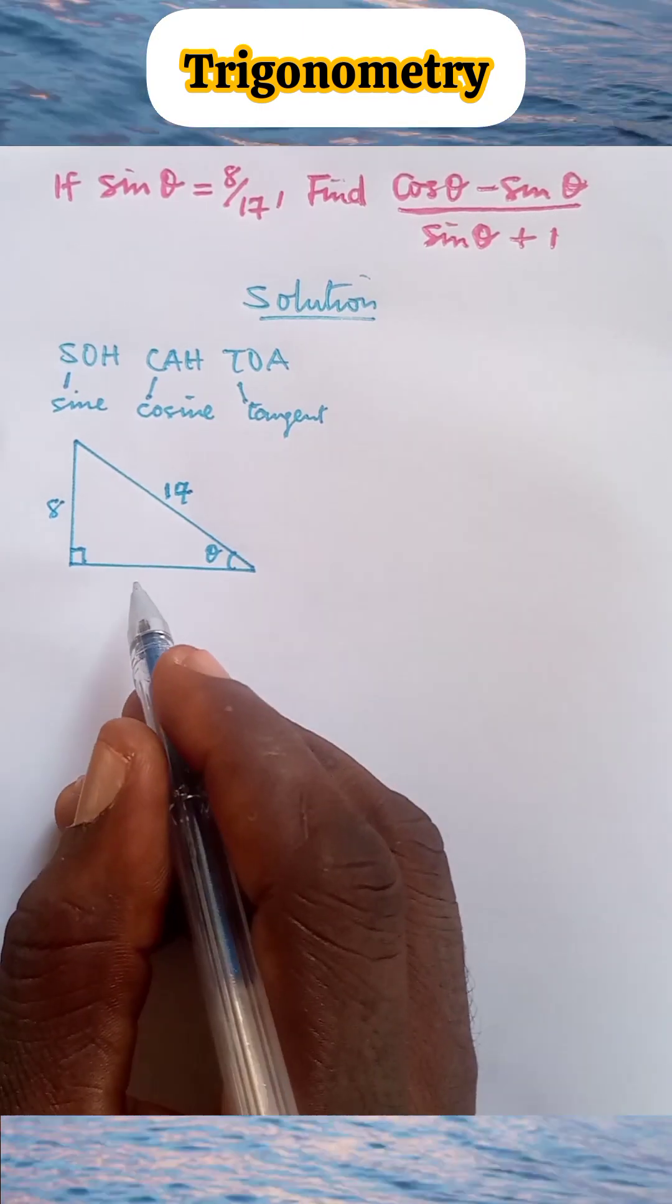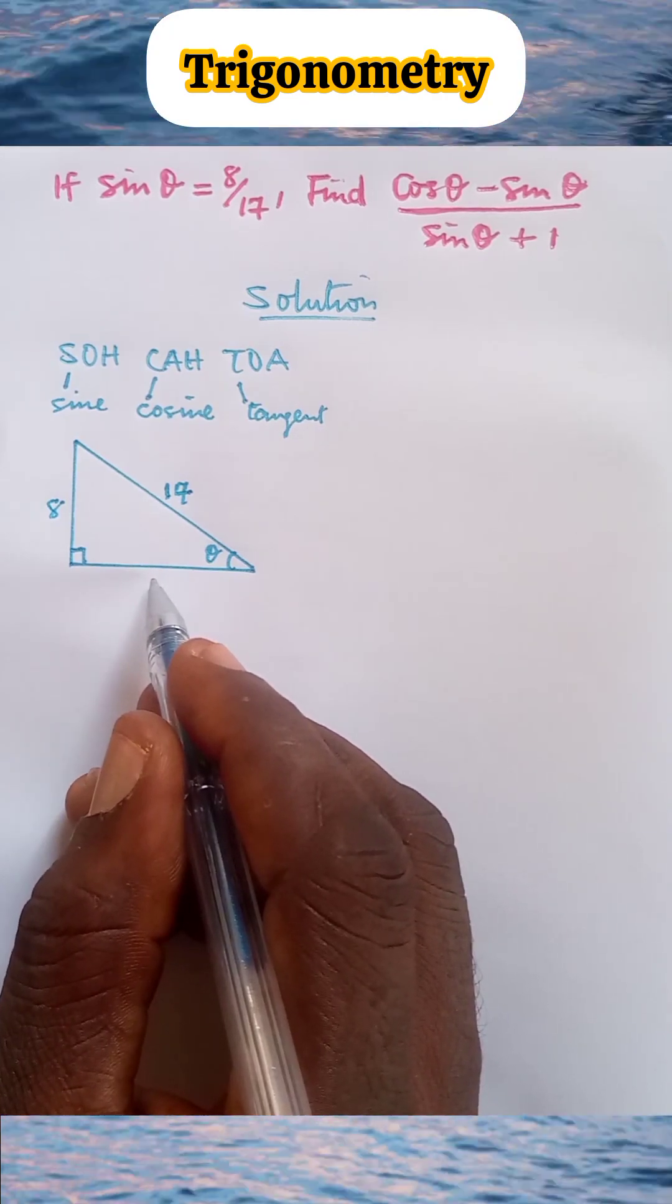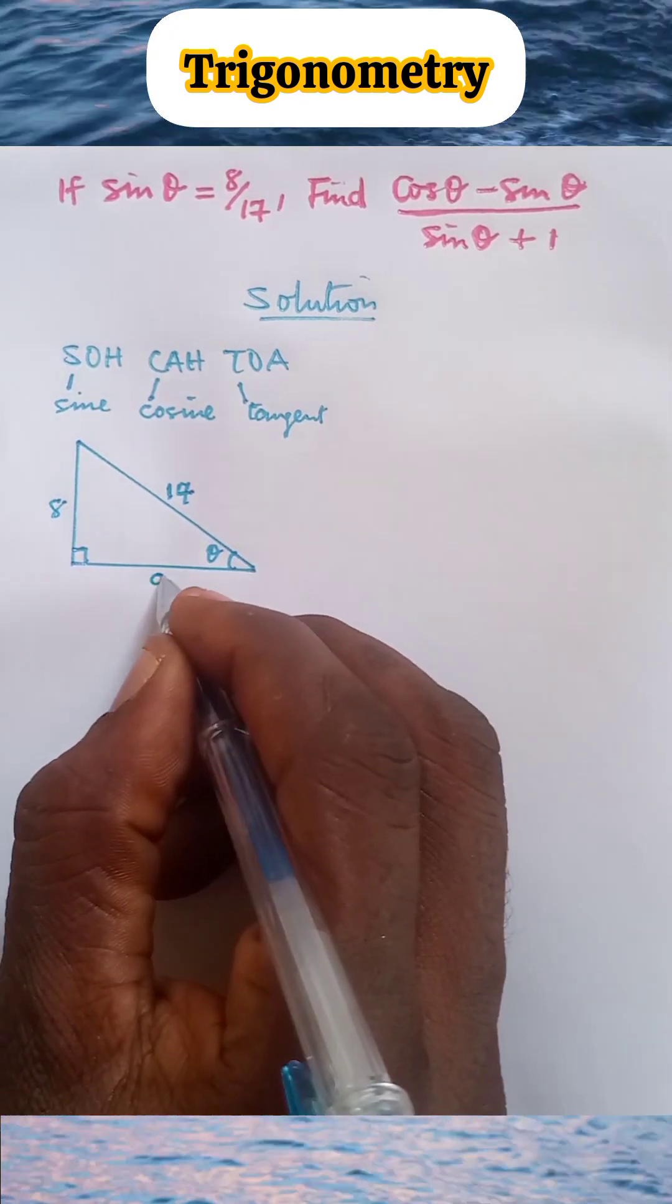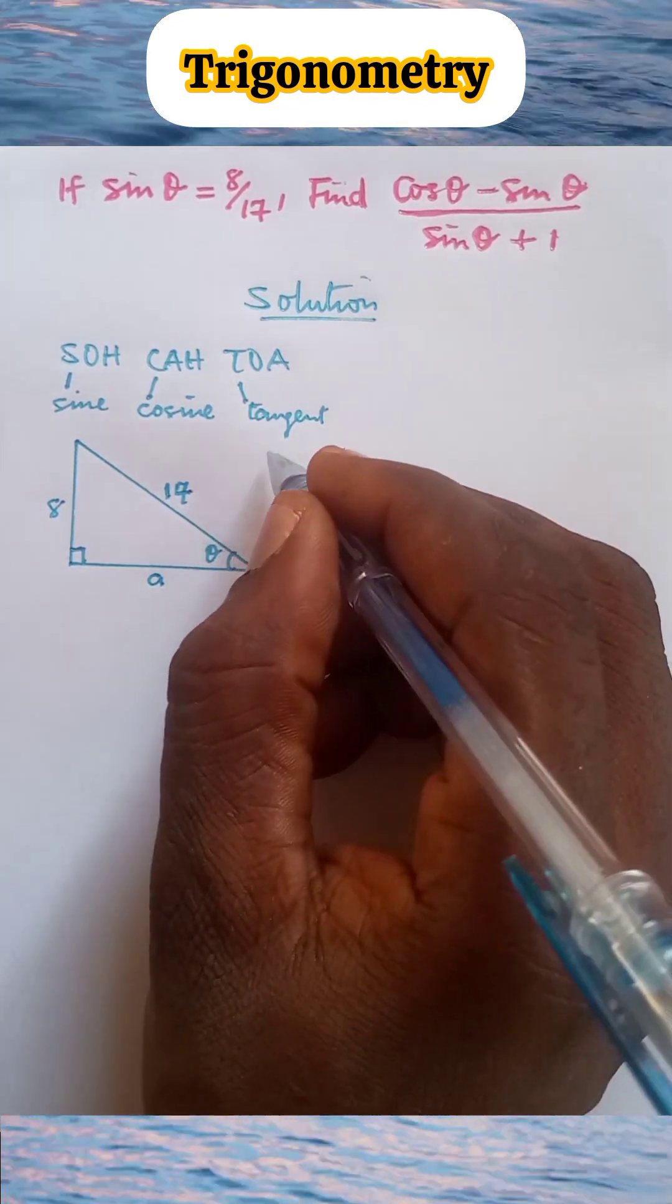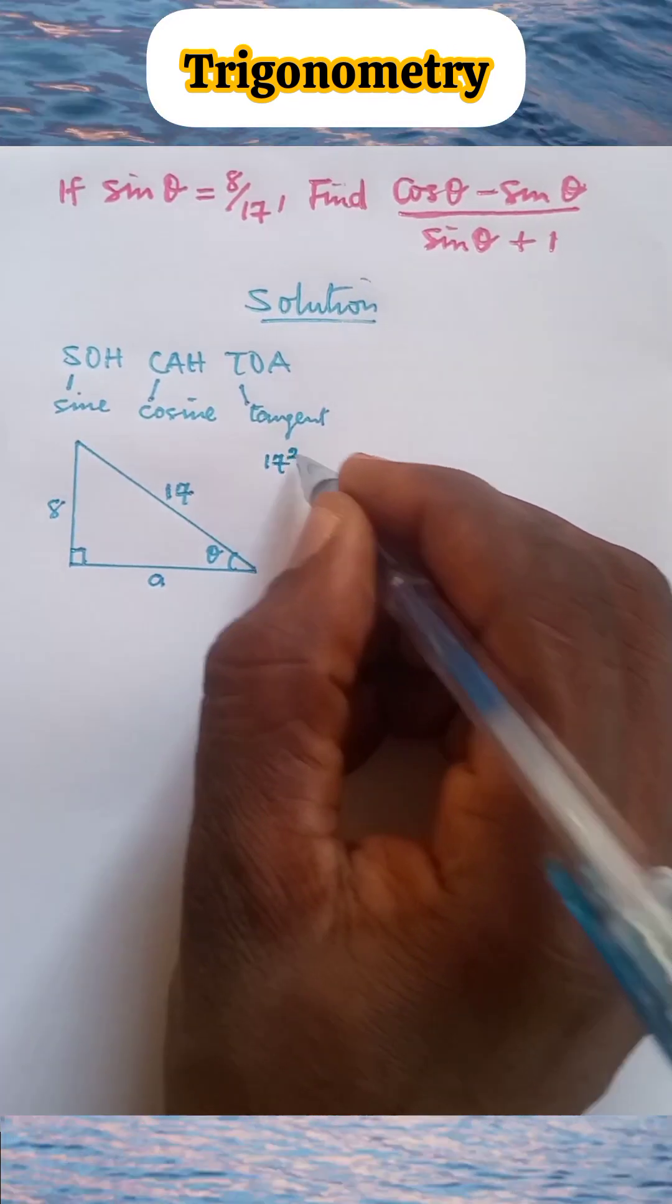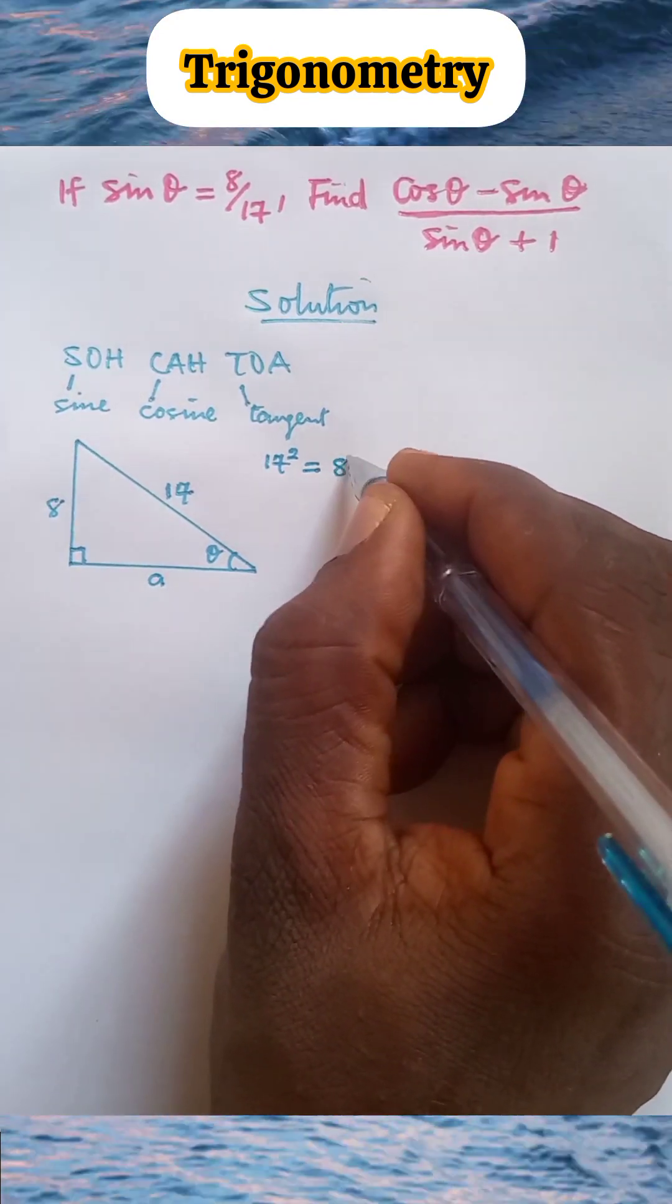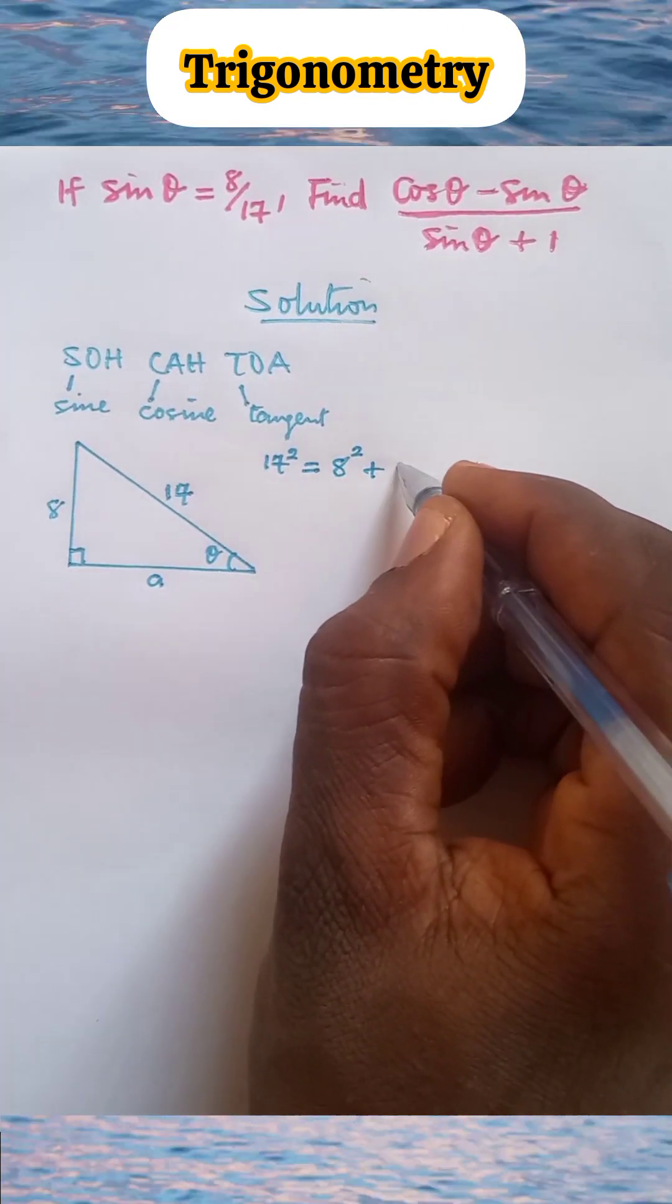Next we are going to determine the length of the adjacent side. Let's call this side A. And applying Pythagoras theorem, we have that the square of the longest side, which is 17², equals 8² + A².